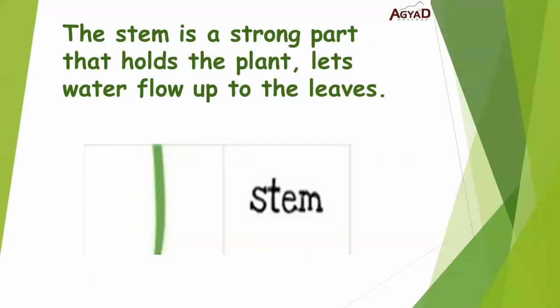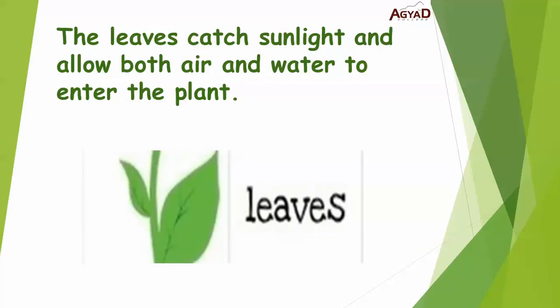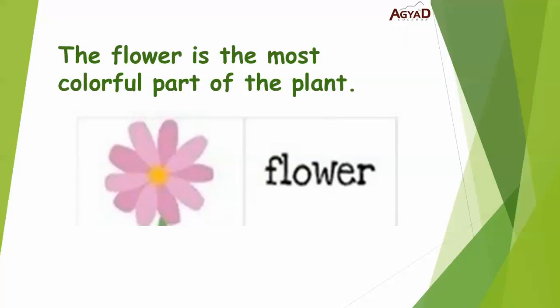The stem is a strong part that holds the plant and lets water flow up to the leaves. Move to the leaves, which catch sunlight and allow both air and water to enter the plant. The flower is the most colorful part of the plant.